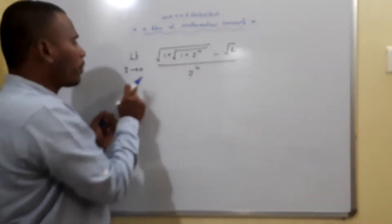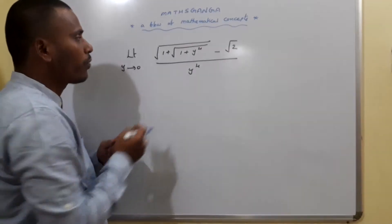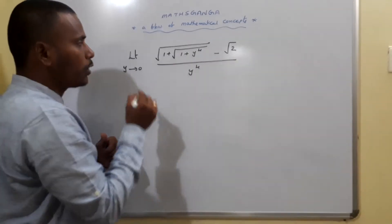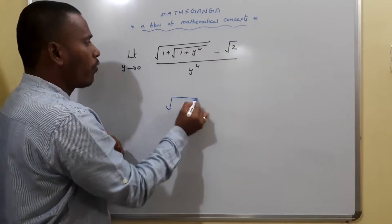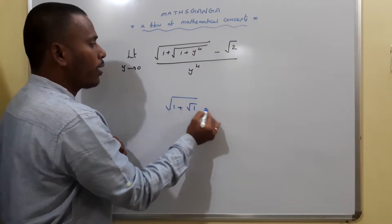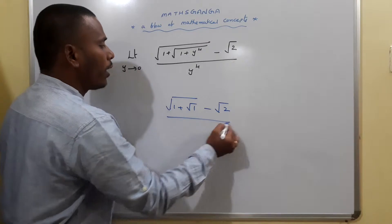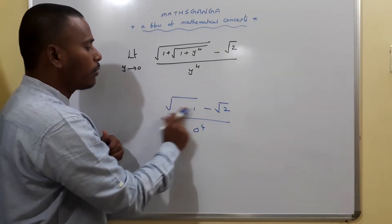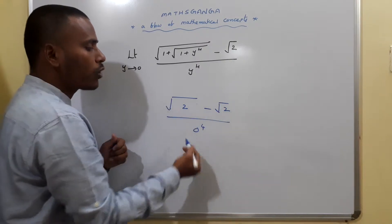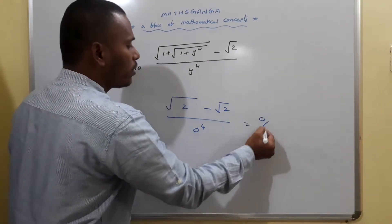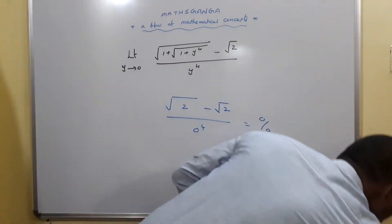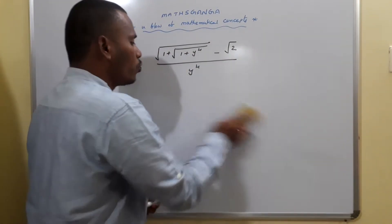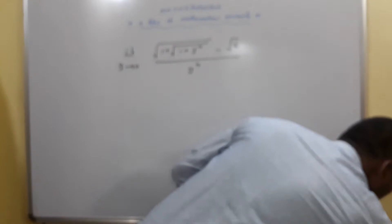Just replace 0 in the place of y as y tends to 0. If you replace 0 here, root of 1 plus 0 is 1, and root of 1 plus root 1 minus root 2 divided by 0 power 4. Root of 1 plus root 1 is nothing but root 2. Root 2 minus root 2 by 0 is 0 by 0.